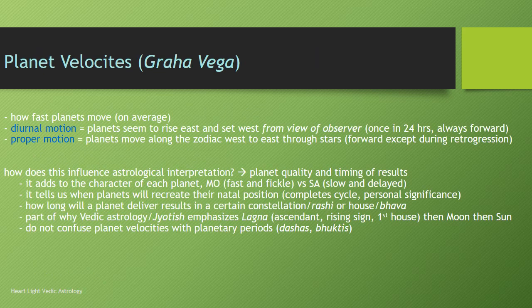So, planet velocities or graha vega in Sanskrit — what is it and why do we care about that as astrologers? Planet velocities essentially are how fast planets move, and on average is good enough for astrology purposes. The values I'll list later in this talk are averages, so keep that in mind.